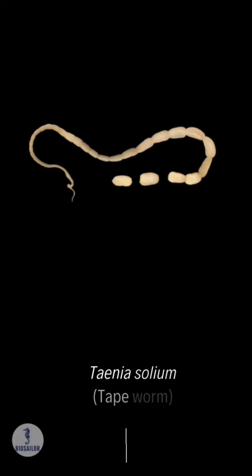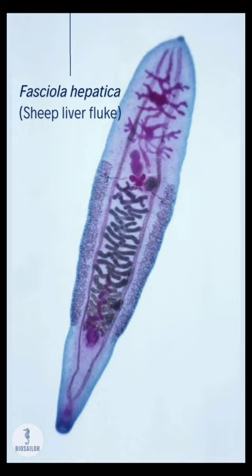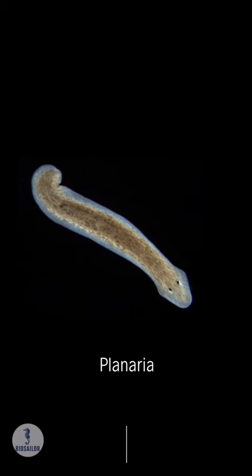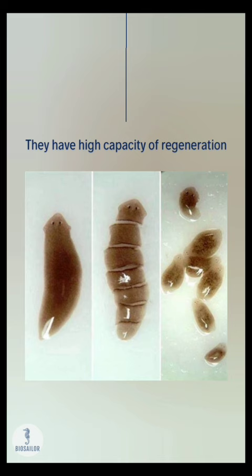A few examples are: Taenia solium (tapeworm), Fasciola hepatica (sheep liver fluke), and Planaria, which have a high capacity for regeneration. Another example is Bipalium, also known as hammerhead worms.